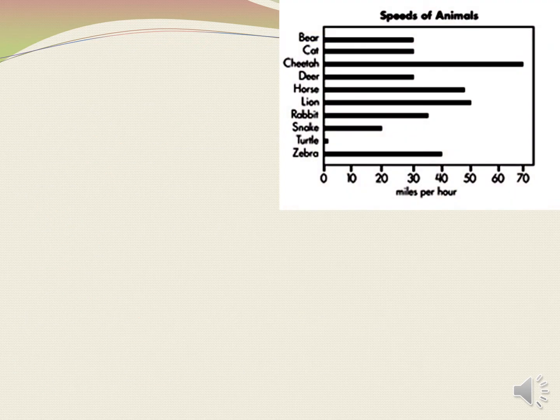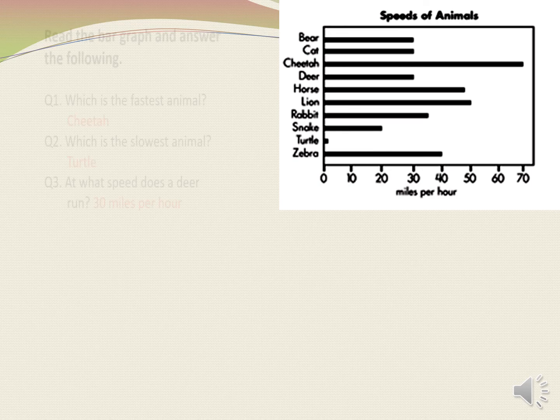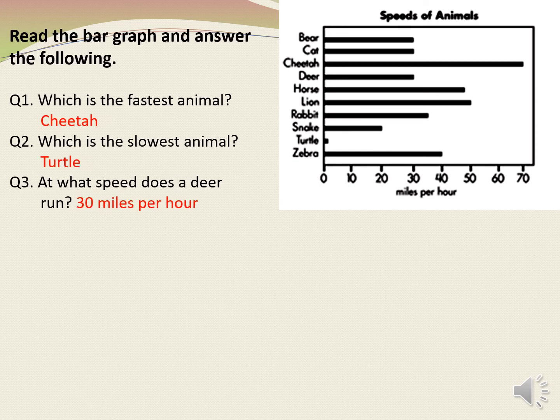Let's see another question. This is again a horizontal bar graph because bars are represented in horizontal position. The title of this bar graph is speeds of animals. Which is the fastest animal? To find out the answer, we need to see the bar which is the longest. The longest bar is for cheetah. Therefore, our answer will be cheetah. Next: which is the slowest animal? The bar which is the shortest represents turtle. Therefore, our answer will be turtle.